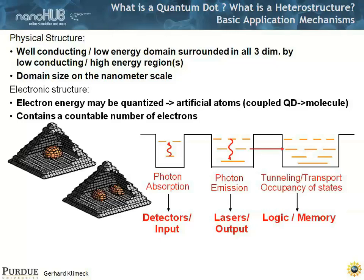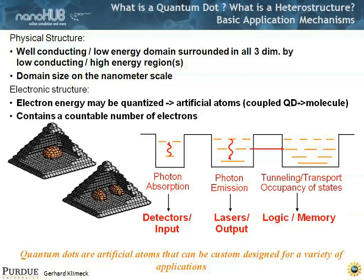Here are some images of quantum dots — an s orbital and p orbitals and a pyramidal dot, to give you an idea. Quantum dots or heterostructures are artificial atoms that can be custom designed for a variety of applications.